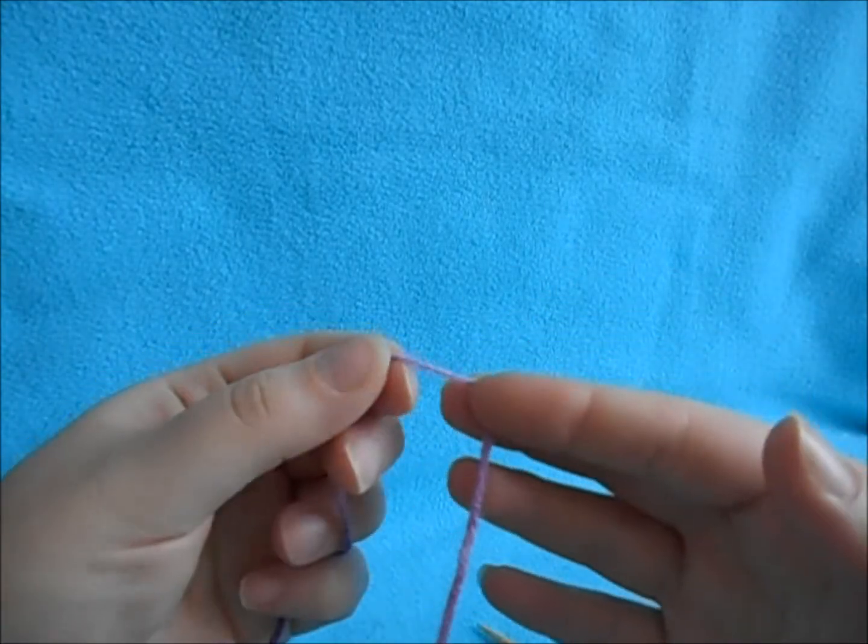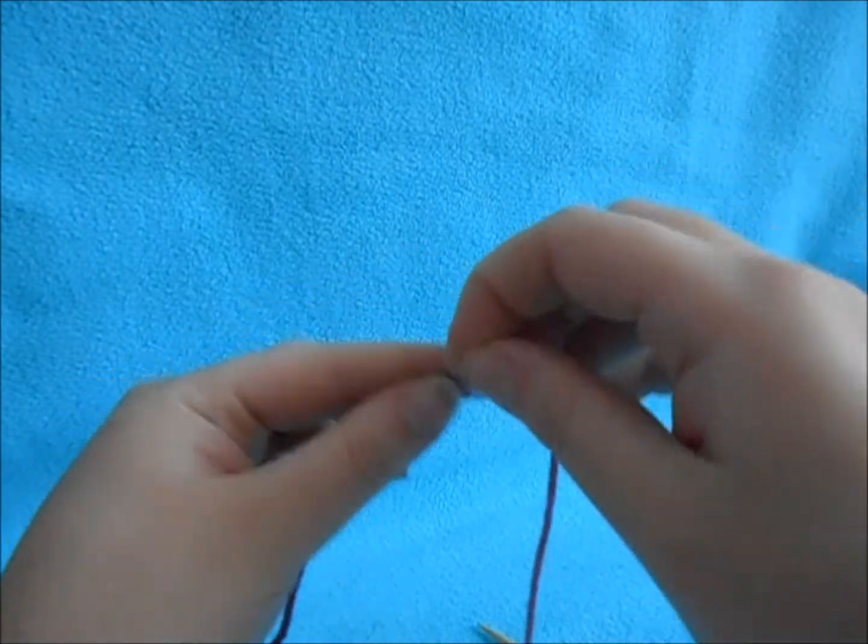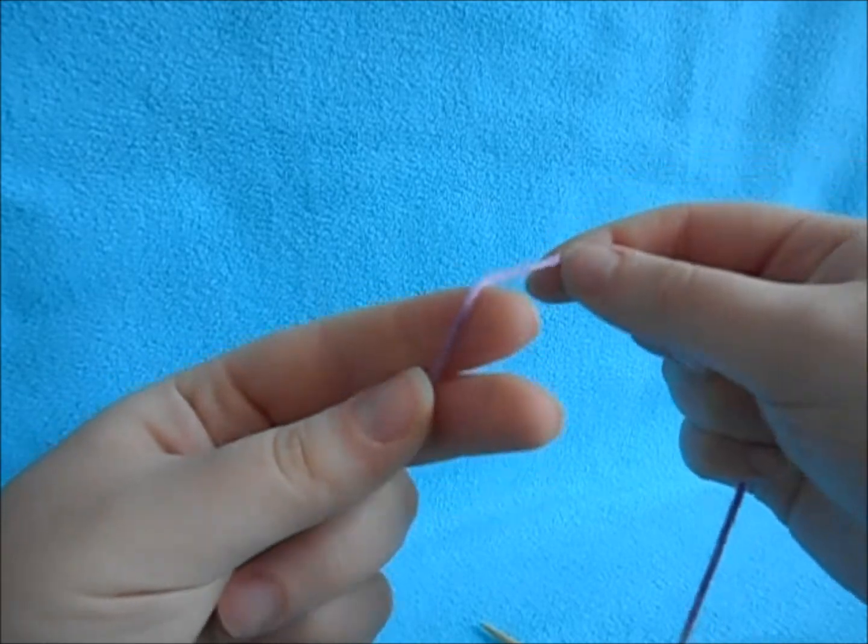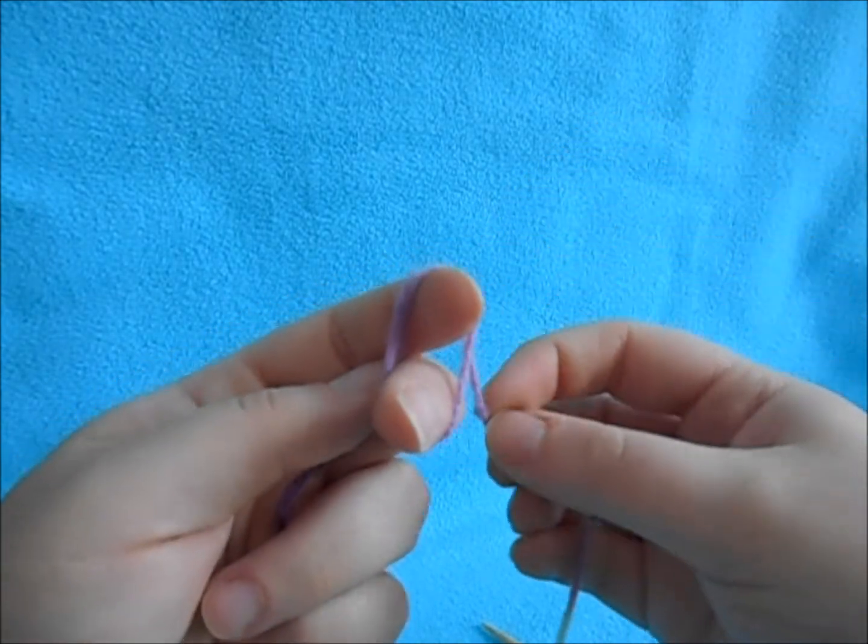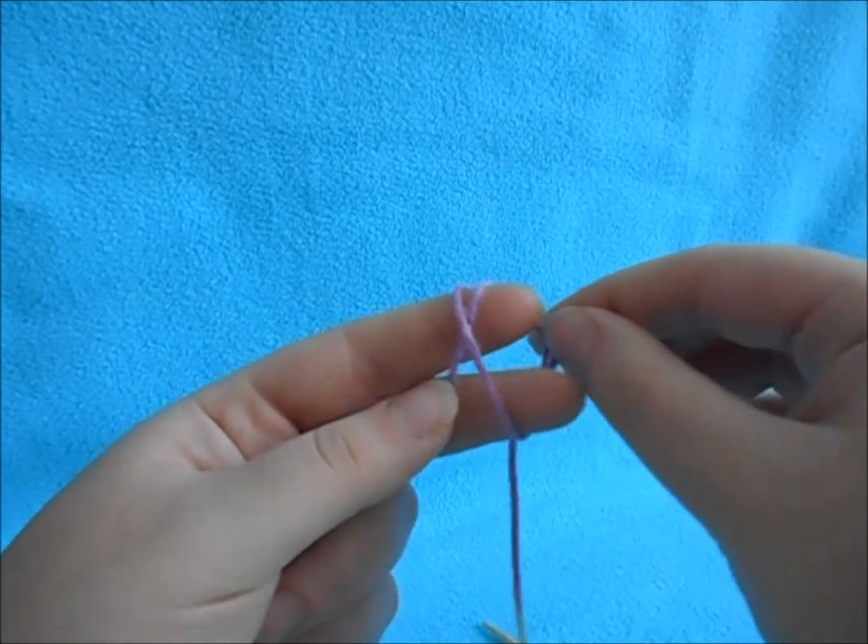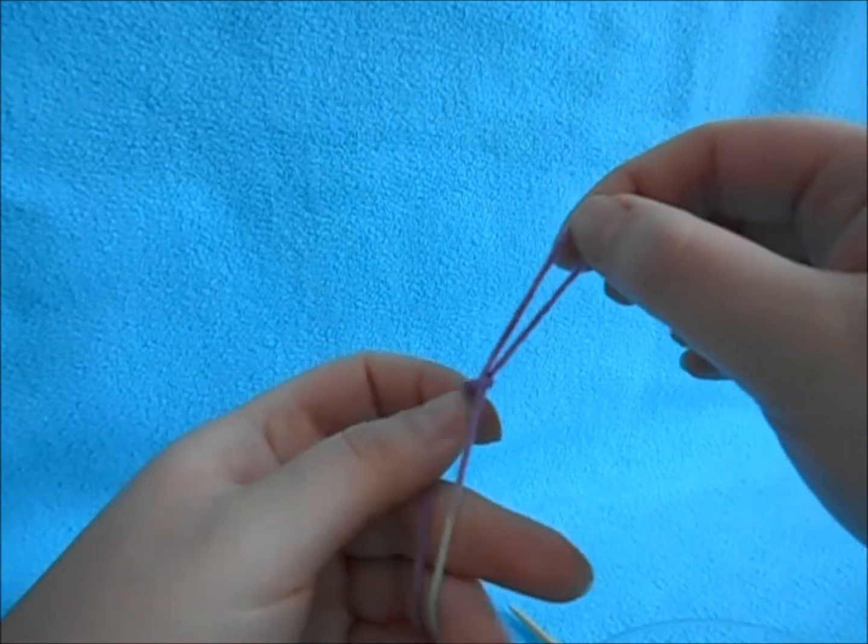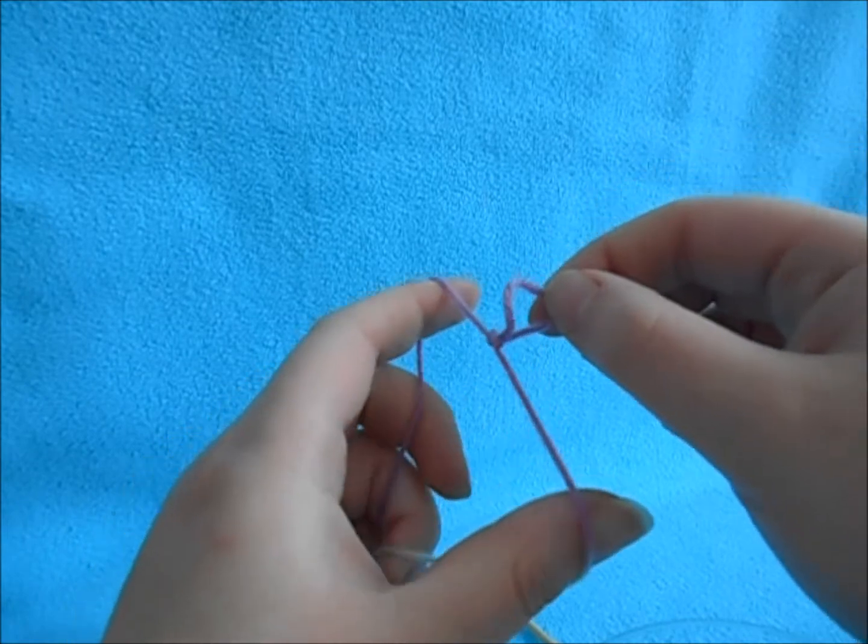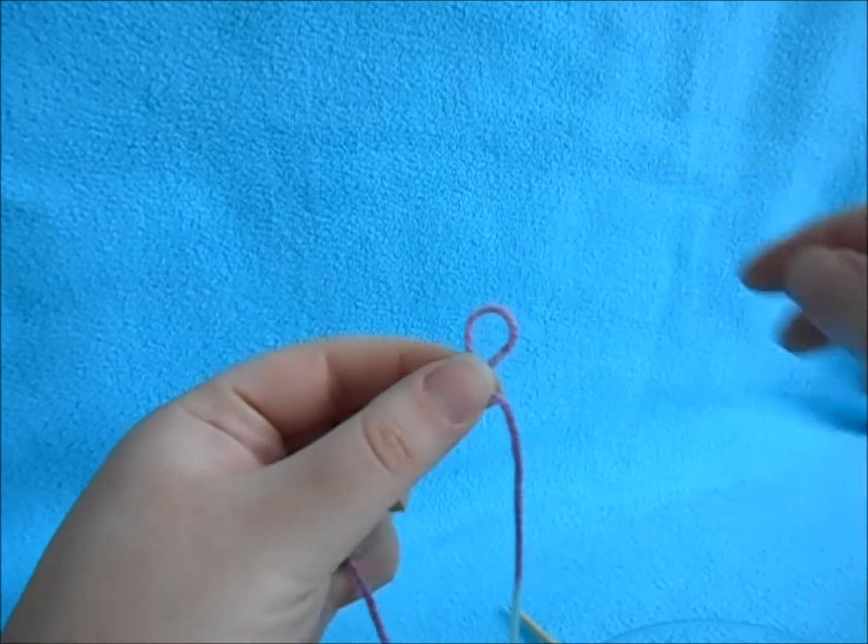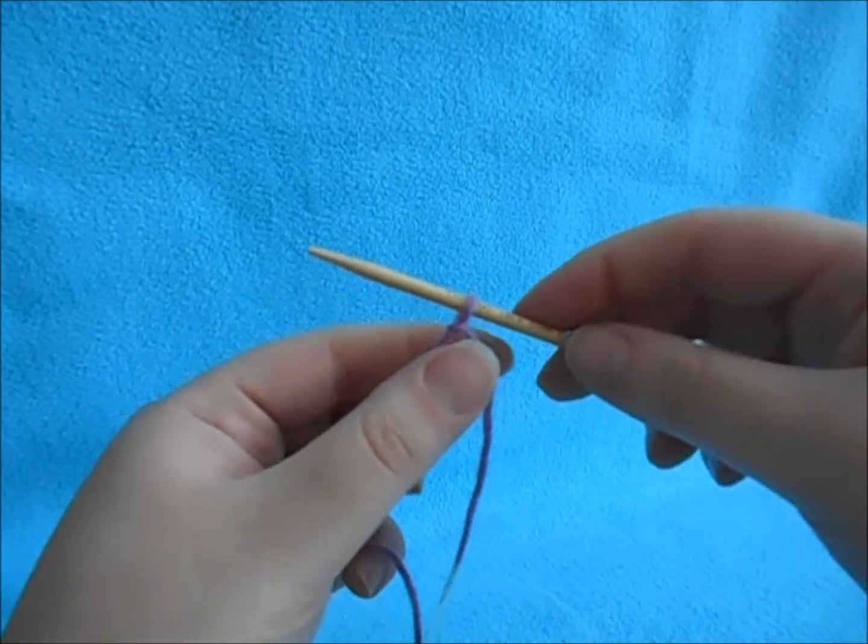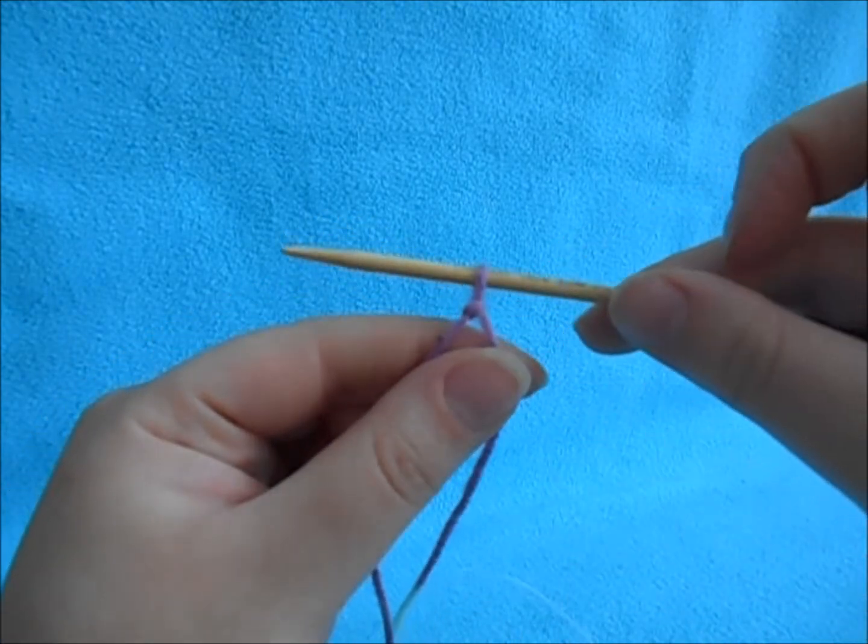Now there's two ways that you can start this, and you can start it by making a slip knot. So the easiest way to make a slip knot is to wrap it around your two fingers, and then pull it through the loop and tighten it. And then you pull up on your two strings to make it the size to fit your needle. And there's your slip knot.